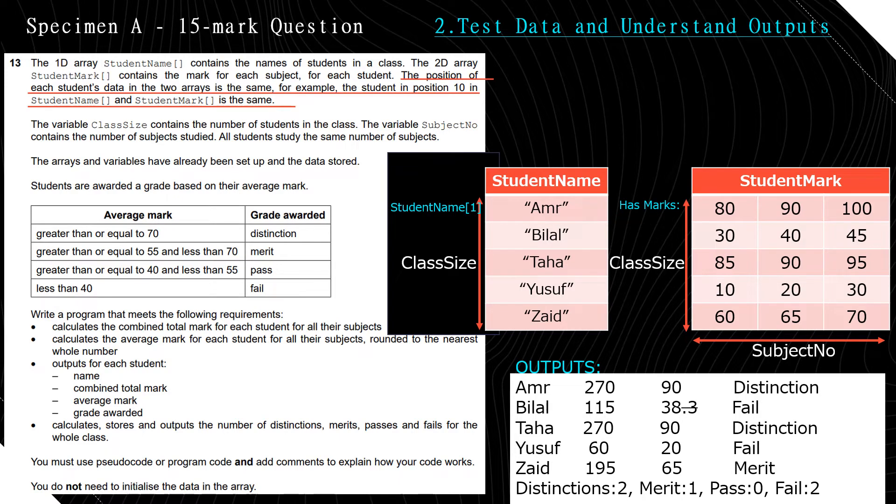So let's see what we need to output according to our test data with these students and these marks. Write a program that meets the following requirements. Calculates the combined total mark for each student for all their subjects. Calculates the average mark for each student for all their subjects rounded to the nearest whole number. Outputs for each student their name, their combined total mark, their average mark, and their grade awarded.